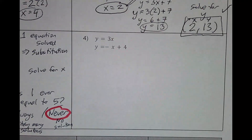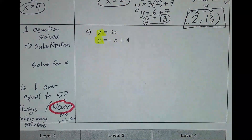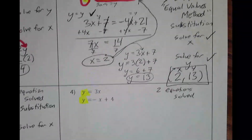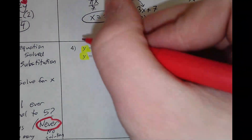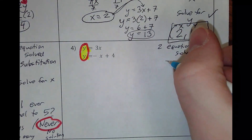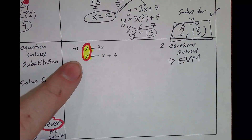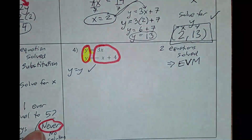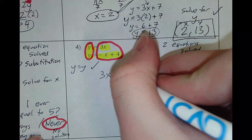Number 4. We have two equations that are solved. Just like we did with problem 2, both equations are solved for y. This is the same situation, so I'm going to use the equal values method — I'm going to set these two equations equal to each other. y equals y, we know that. But the important thing is to set the right-hand sides equal: 3x equals negative x plus 4.